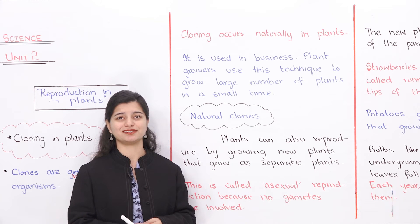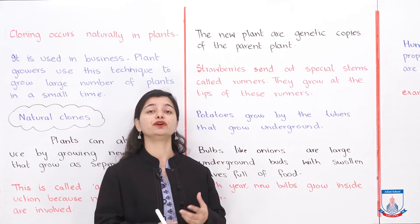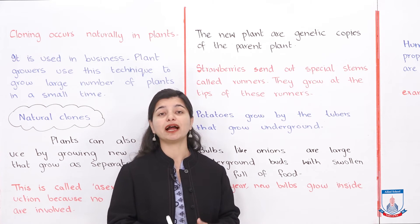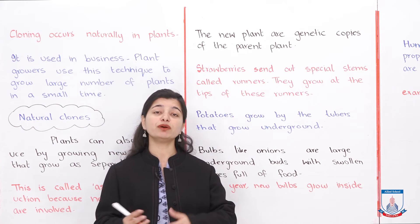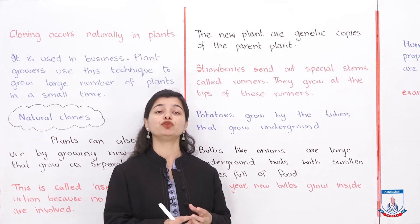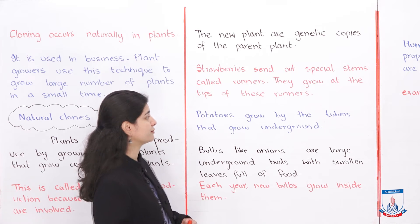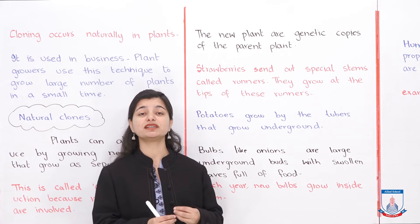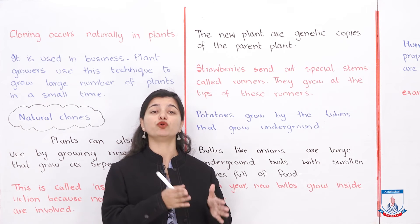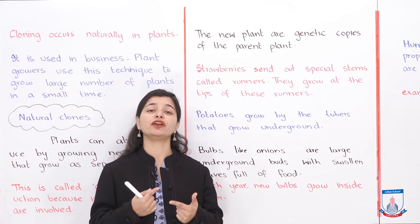Let's look at some real-life examples. The new plants are genetic copies of the parent plant, because they are created from the same part — genetically they will be the same. First example: strawberries send out special stems called runners, and new strawberry plants grow at the tips of these runners. These stems expand and create new strawberry plants, so one plant produces another through runners.